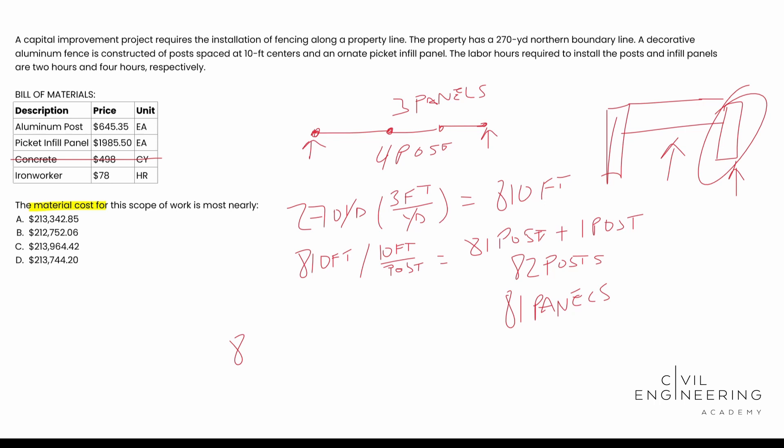So we have 82 posts times how much is a post? It's $645.35 per post. And for our panels, we know that's going to be 81 panels times $1,985.50 per panel.